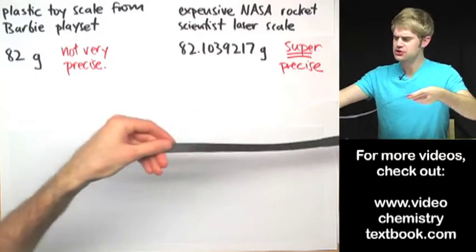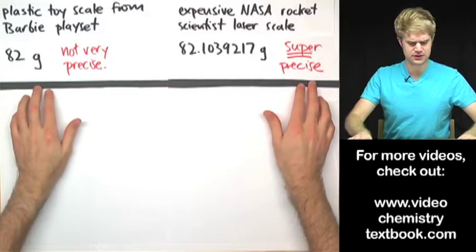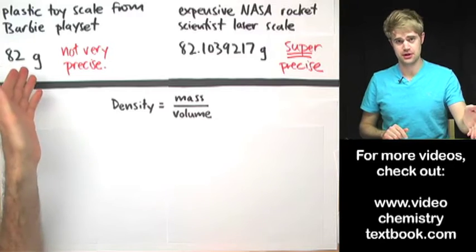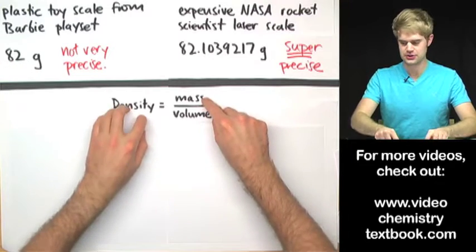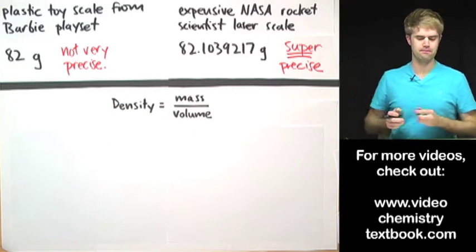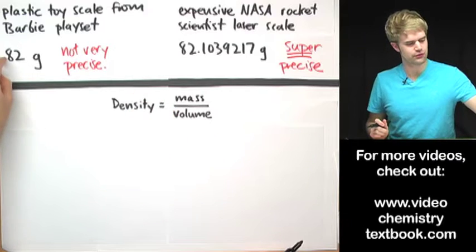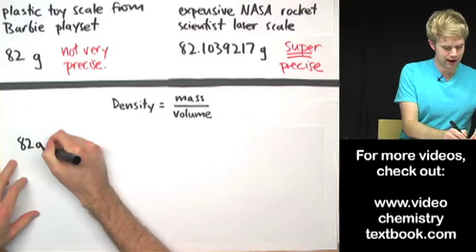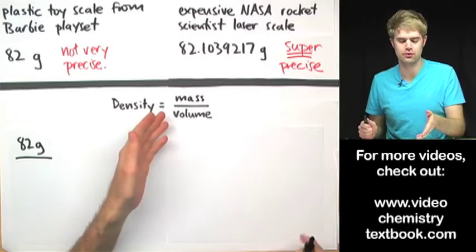Now I've got these two values for the mass of the rock. Let's say that I want to use the mass of the rock to determine its density. To do density I'll do mass divided by volume. So let me take the mass from the Barbie playset here. So I'll take 82 grams, that's the mass, and then I'll need to find out the volume of the rock.